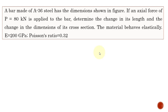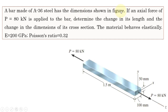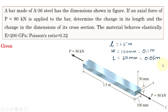Welcome to this lecture. Today we are going to see how to determine the change in dimension in a bar when it is subjected to an axial force. A bar made of A36 steel has the dimensions shown. The bar has a length of 1.5 meters, a width of 100 mm (0.1 m), and a thickness of 50 mm (0.05 m). An axial force of 80 kN is applied to the bar. We need to determine the change in its length and the change in the dimensions of its cross section.